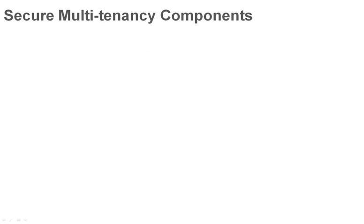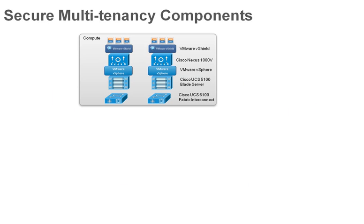Let's look at the components of the SMT architecture. First, at the compute layer, virtualization is provided by VMware vSphere, with virtual networking and security made possible by VMware vShield and the Cisco Nexus 1000v virtual switch. The physical servers are Cisco UCS blades, governed by a UCS 6100 fabric interconnect.